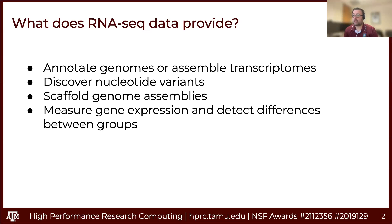We can also use RNA-seq to look for genomic variants by mapping those reads back to the genome or to an assembled transcriptome to look for differences. There are programs that allow us to do scaffolding of genome assemblies. Especially with short-read genome assemblies, which are often highly fragmented, RNA-seq data that spans gaps can stitch together different contigs to make longer contiguous segments called scaffolds.